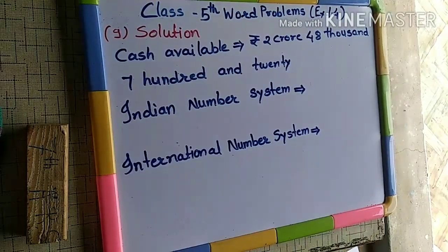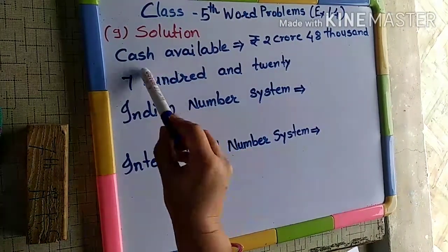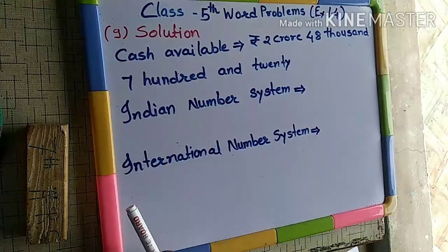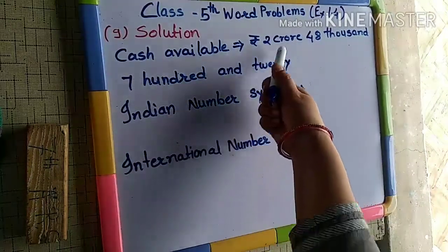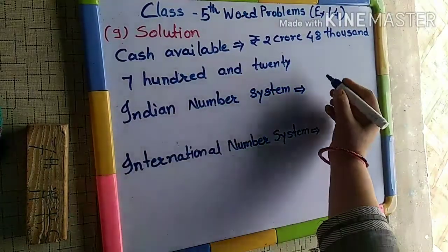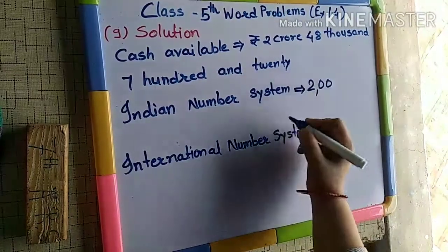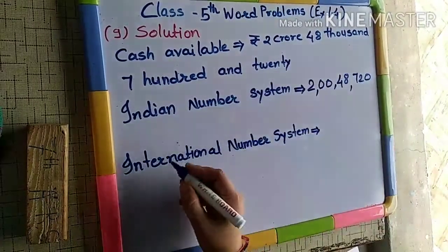Now see the next one. The total cash available in a bank is Rs. 2 crores 48,720. Read the amount in numerals using the Indian and international place value system. We have to write this number in both the Indian and international number systems. First we will decode the number in the Indian number system because the number name is given in Indian terms. So: 2 crore is written as 2,00,00,000. Then the lakh place is 0. Then 48,000, and then 720. We have written it in the Indian number system.